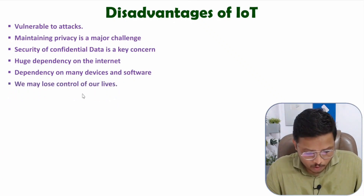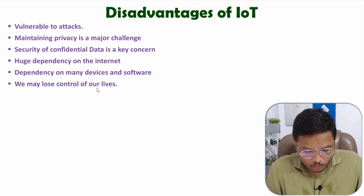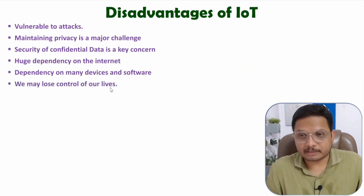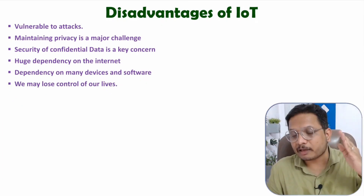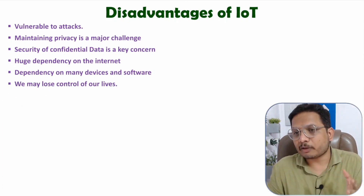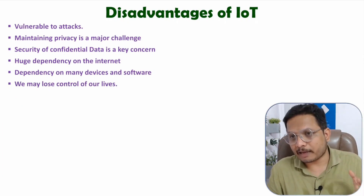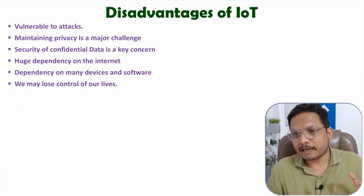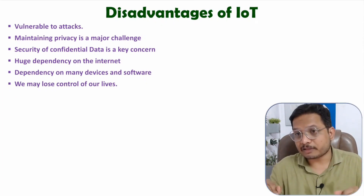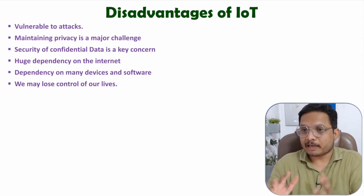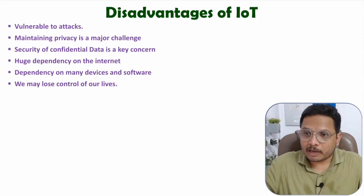Speaking of control, we can lose control over our lives because things are controlled on the Internet. If the servers fail, we can lose control because humans are not directly in control and might not even have any idea about what is happening. If the servers on the Internet fail, this is quite possible.